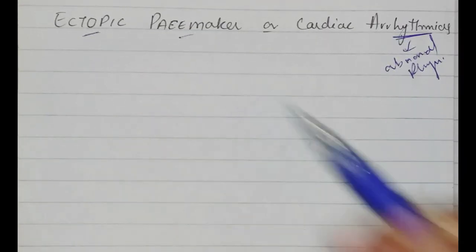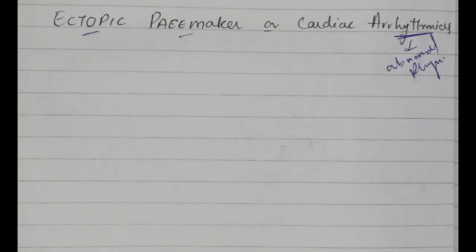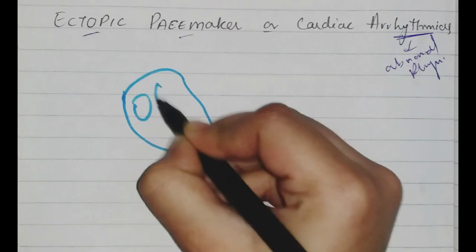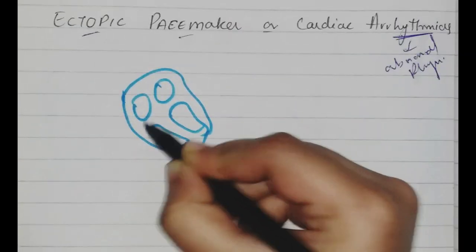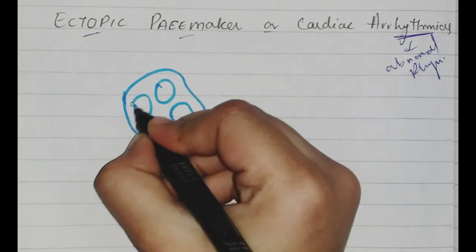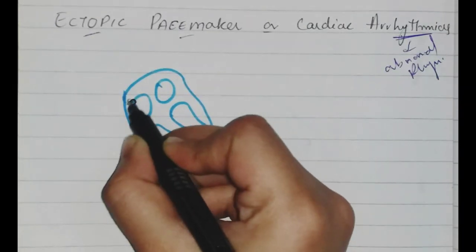If I roughly draw the diagram of the heart, we know this node, as I have told in previous videos, is present in the right atrium and primarily generates impulses.